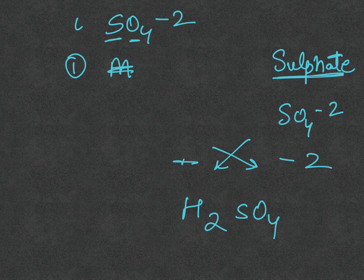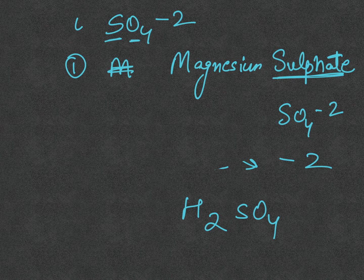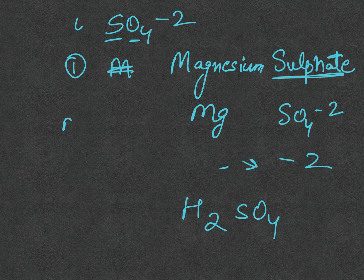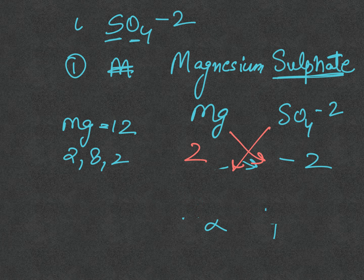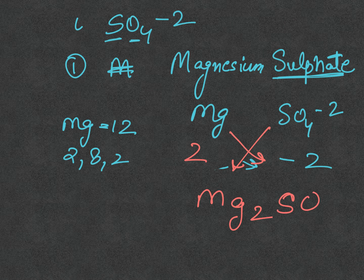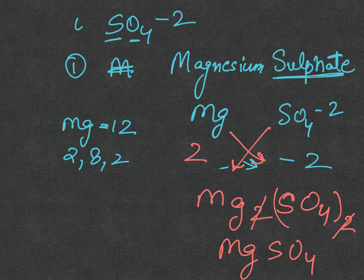Another example is magnesium sulfate. Writing the symbol Mg — the atomic number of magnesium is 12 so its valency is 2 — and SO₄²⁻ with charge 2. After performing the crisscross method we get Mg₂(SO₄)₂, but both simplify, giving the final formula MgSO₄.